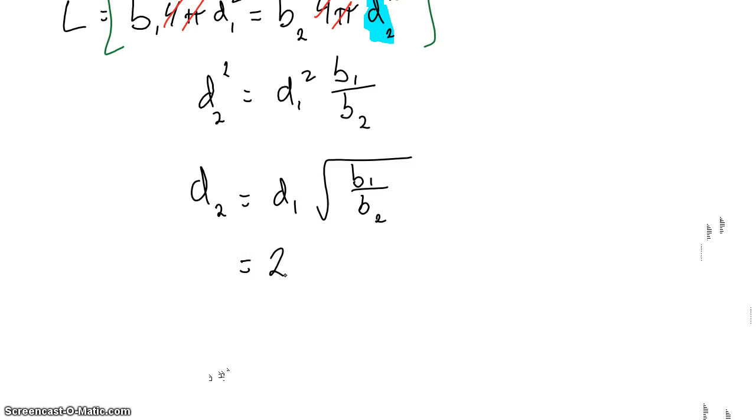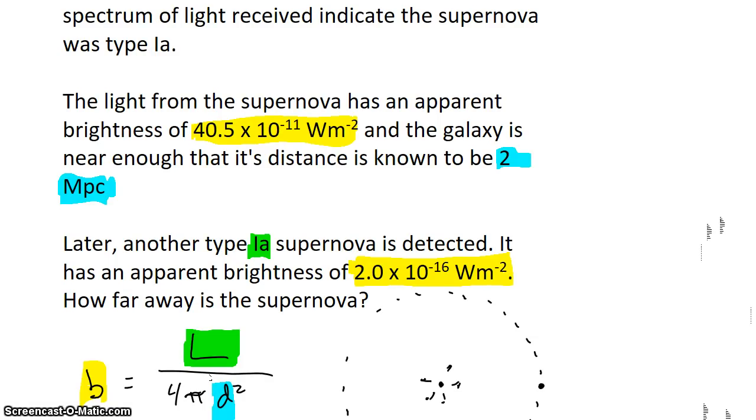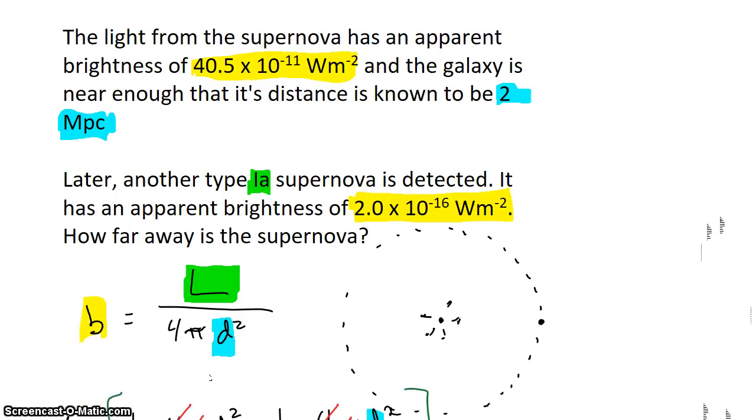We know that the distance to the first supernova was 2 megaparsecs. And we know the two apparent brightnesses. The first one was 40 × 10^-11. The second one was 2 × 10^-16.